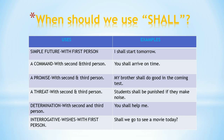The next modal is 'shall.' For simple future tense with the first person, we use 'shall': 'I shall start tomorrow,' or 'We shall start tomorrow.' With the second and third person, 'shall' is used to express a command, promise, threat, or determination.